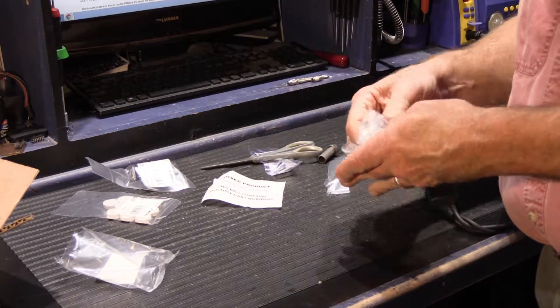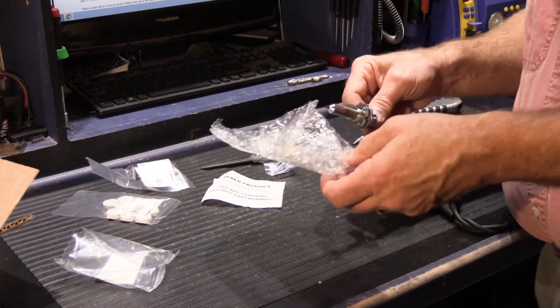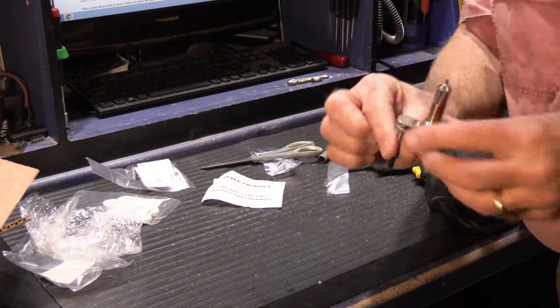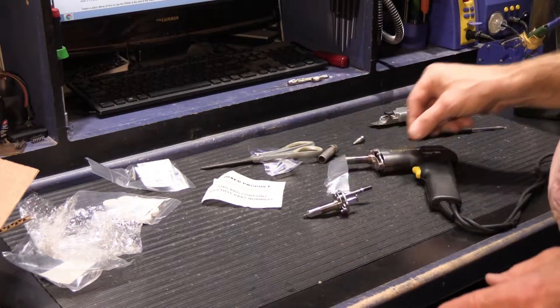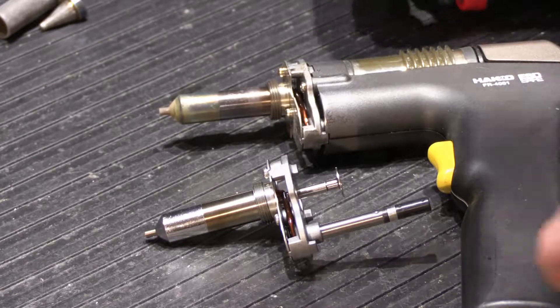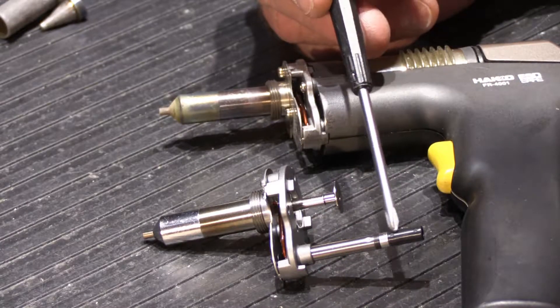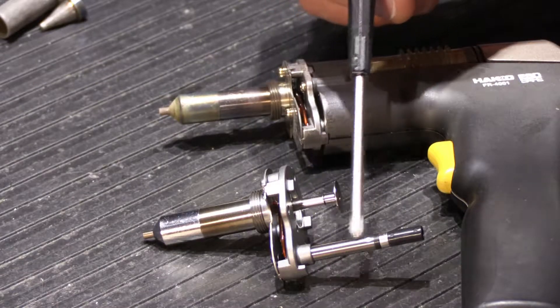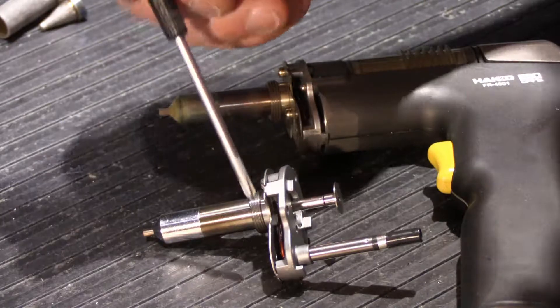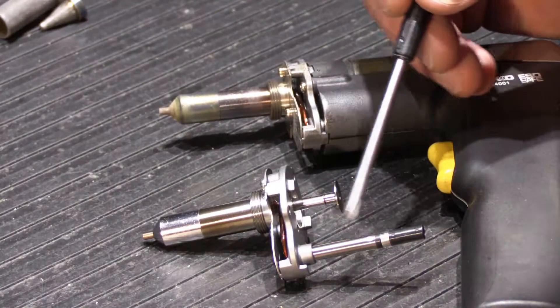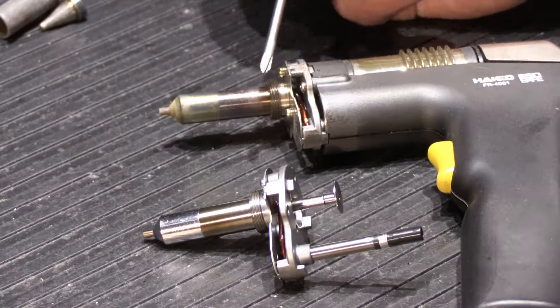They wrapped it up well, as they should, because this is not an inexpensive part. So there's our new heated nozzle assembly. There's nothing like brand new parts—they're all clean and shiny. Let's take a quick look. This is the actual heater assembly right here. There's a sensor down in here.